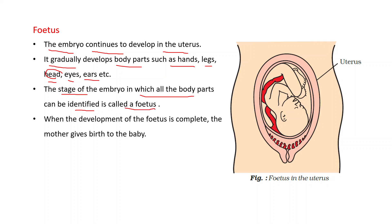Check the spelling: F-O-E-T-U-S, fetus. When the development of the fetus is complete, the mother gives birth to the baby. You can see the diagram of the fetus in the uterus — all the body parts can be identified in it.